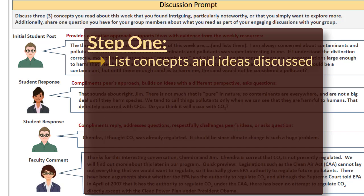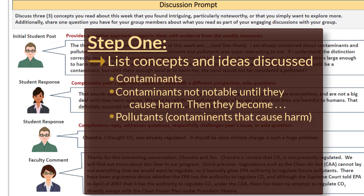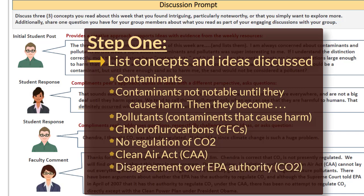In this case, the list would contain: contaminants that are prevalent but not notable until they cause harm; pollutants, which are contaminants that harm humans; chlorofluorocarbons; no regulation of CO2; the Clean Air Act; and disagreements about whether the EPA has authority to regulate CO2, as well as the Clean Power Plan.